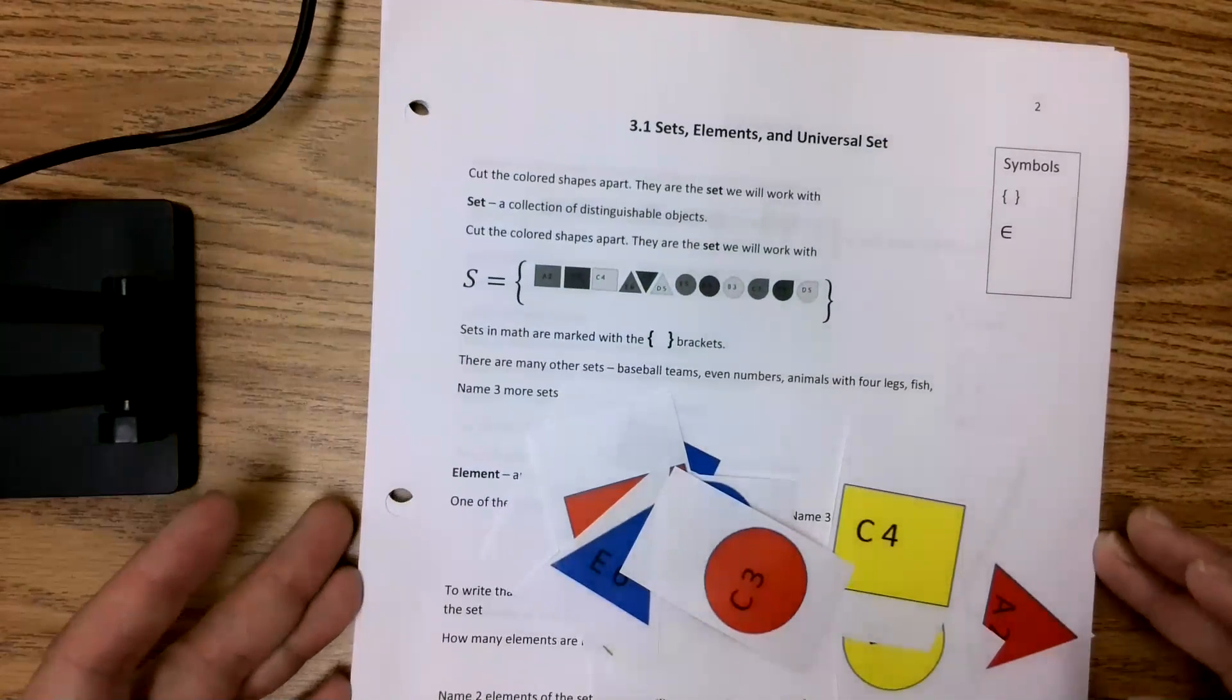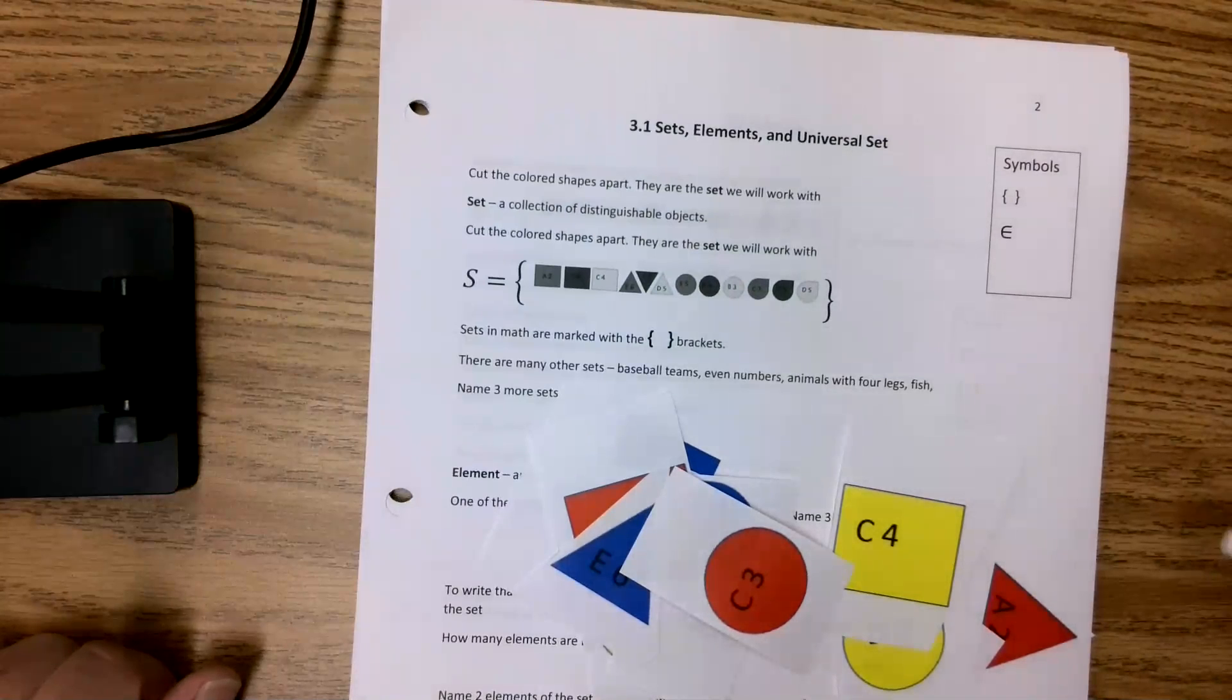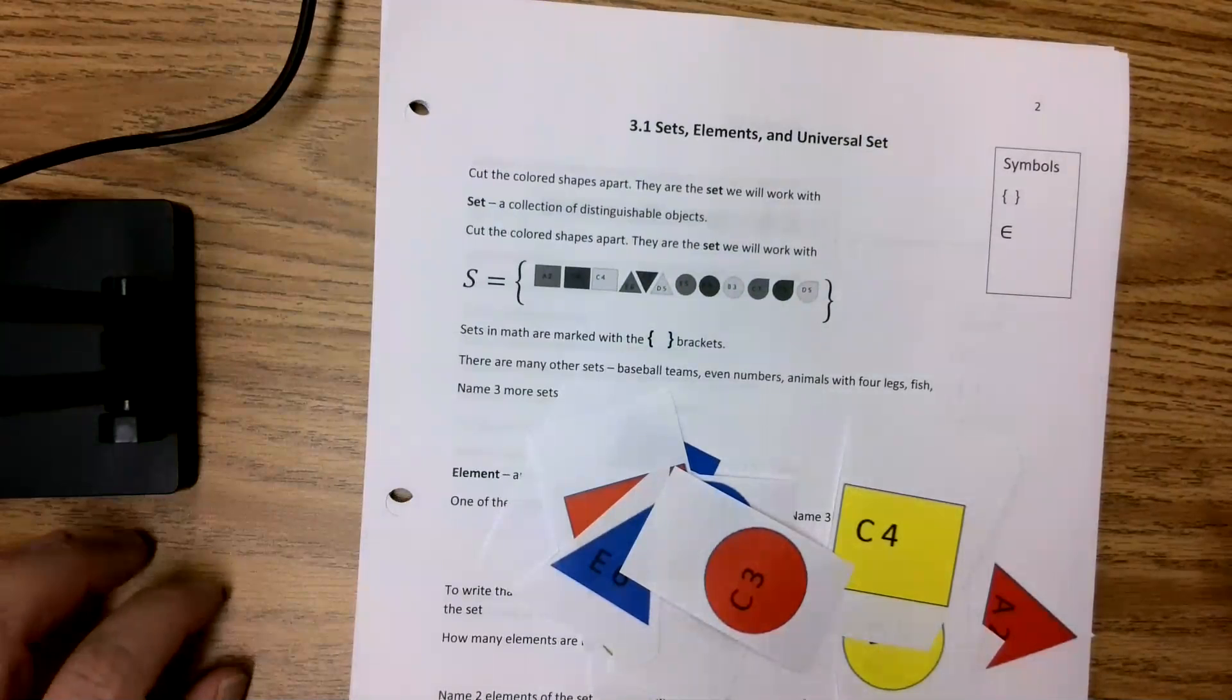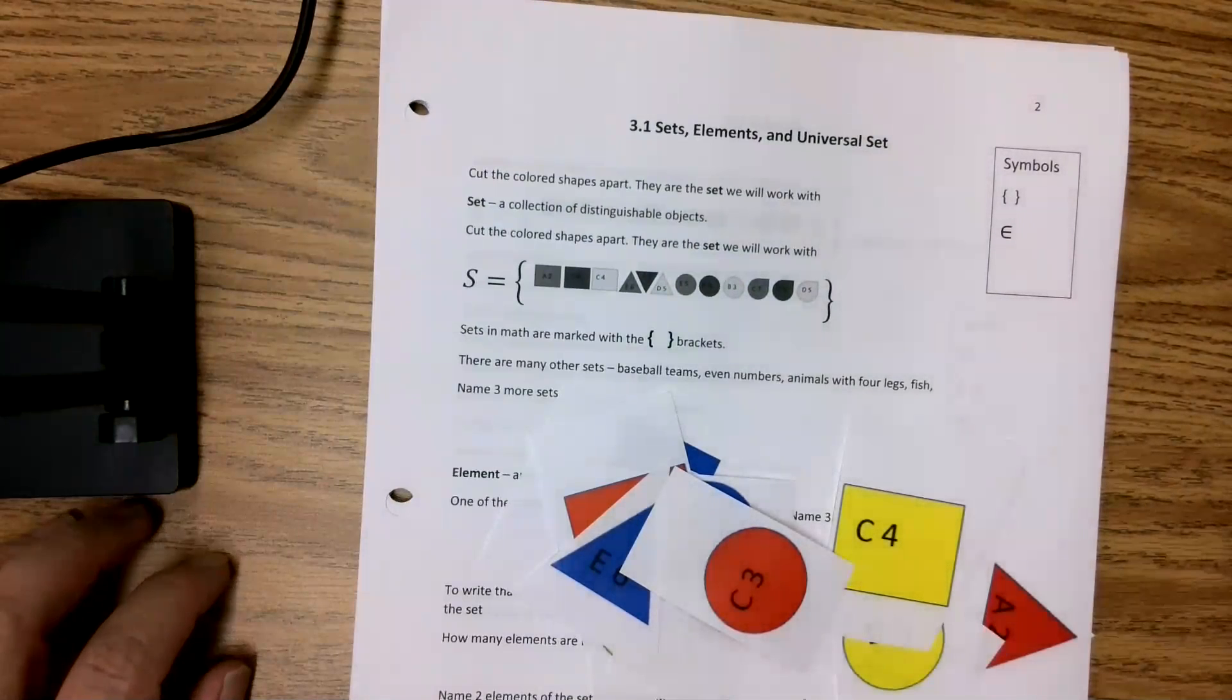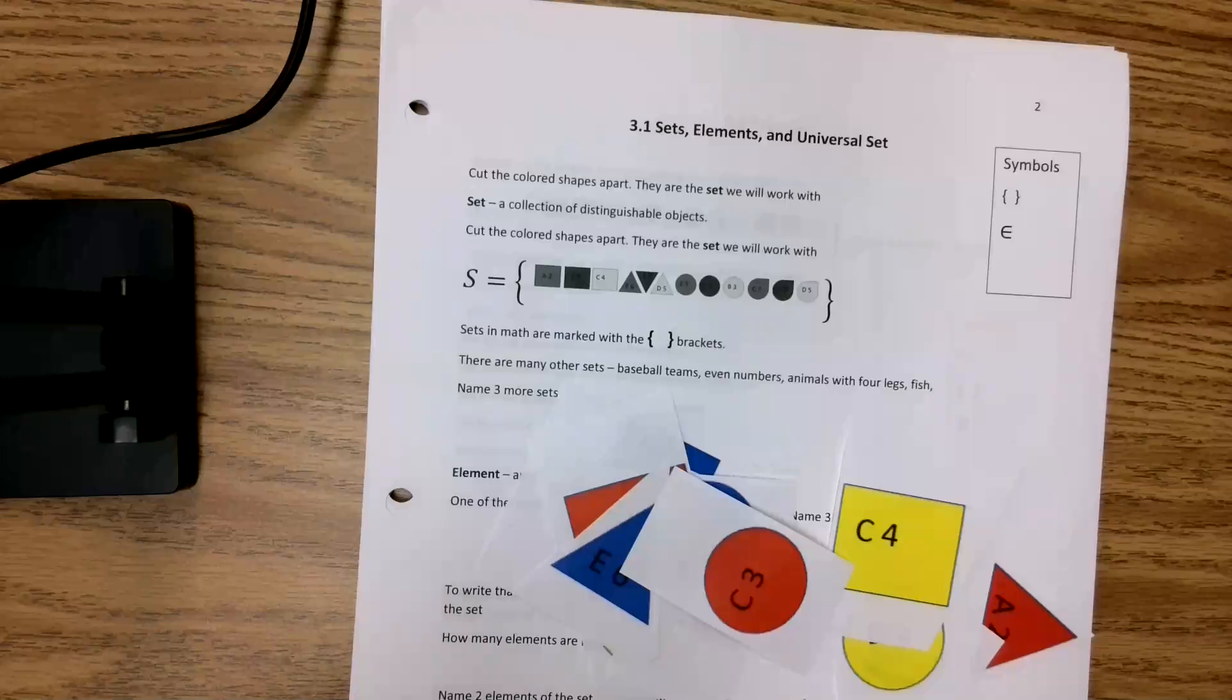All right. So we are going to start with some basic definitions. This chapter is really different than finance. Finance, the questions were pretty straightforward, but the formulas were a little scary. By the time we got on to making payments and annuities, those formulas were long and you had to be careful.